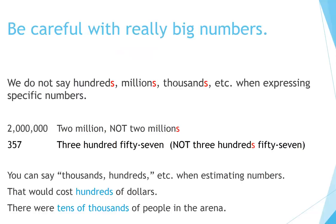Be careful with really big numbers. We do not say hundreds, millions, thousands, etc. when expressing specific numbers — for example, 'two million,' not 'two millions'; 'three hundred fifty-seven,' not 'three hundred fifty-sevens.' You can say thousands, hundreds, etc. when estimating: 'That would cost hundreds of dollars' or 'There were tens of thousands of people in the arena.'